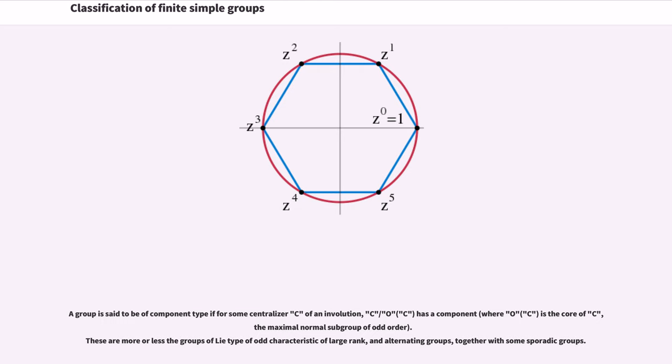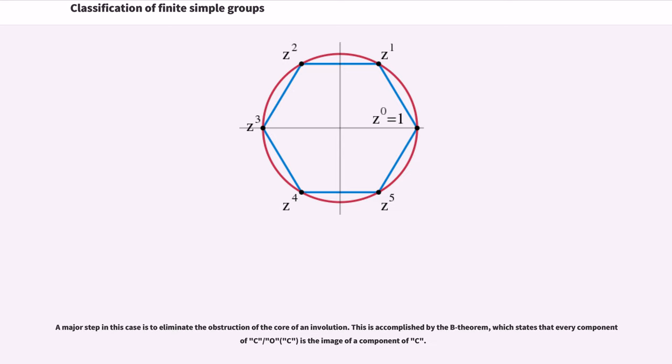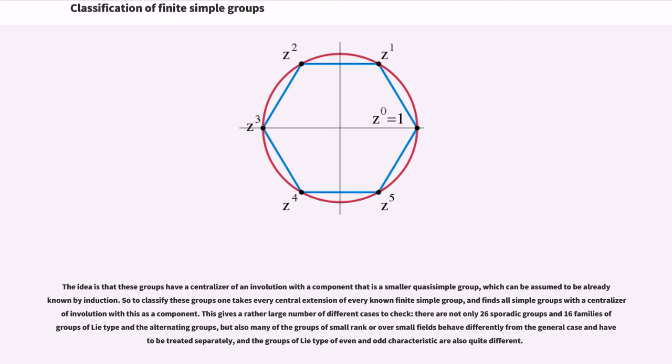A group is said to be of component type if for some centralizer C of an involution, C/O(C) has a component, where O(C) is the core of C, the maximal normal subgroup of odd order. These are more or less the groups of Lie type of odd characteristic of large rank and alternating groups, together with some sporadic groups. A major step in this case is to eliminate the obstruction of the core of an involution. This is accomplished by the B-theorem, which states that every component of C/O(C) is the image of a component of C.